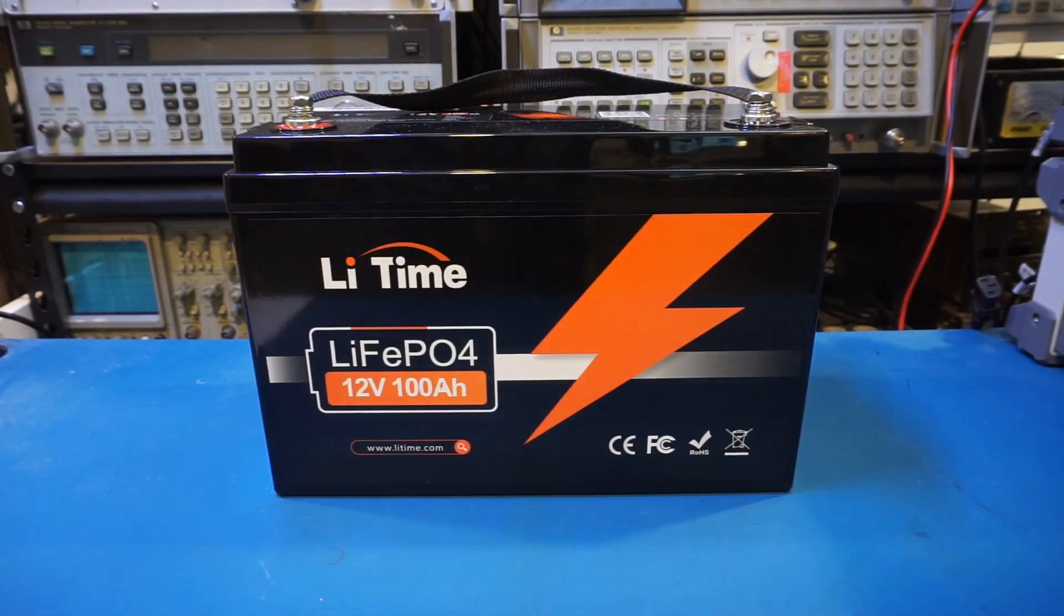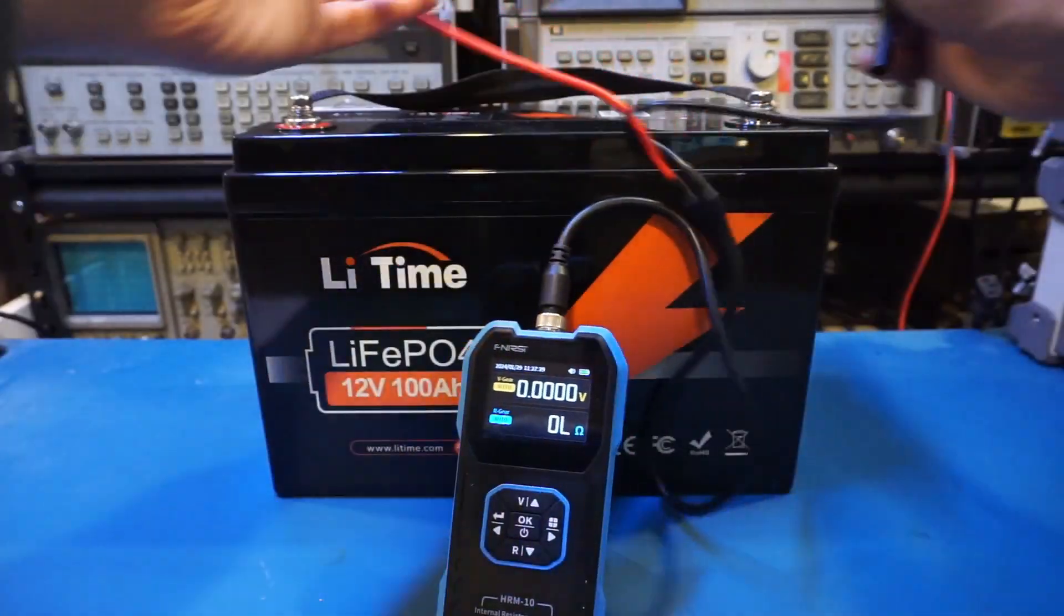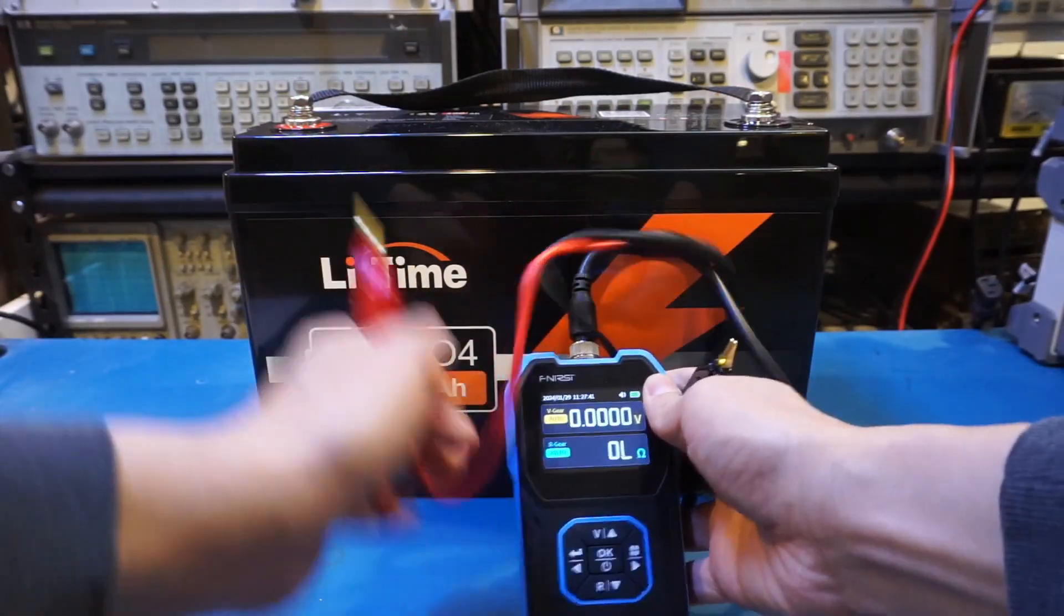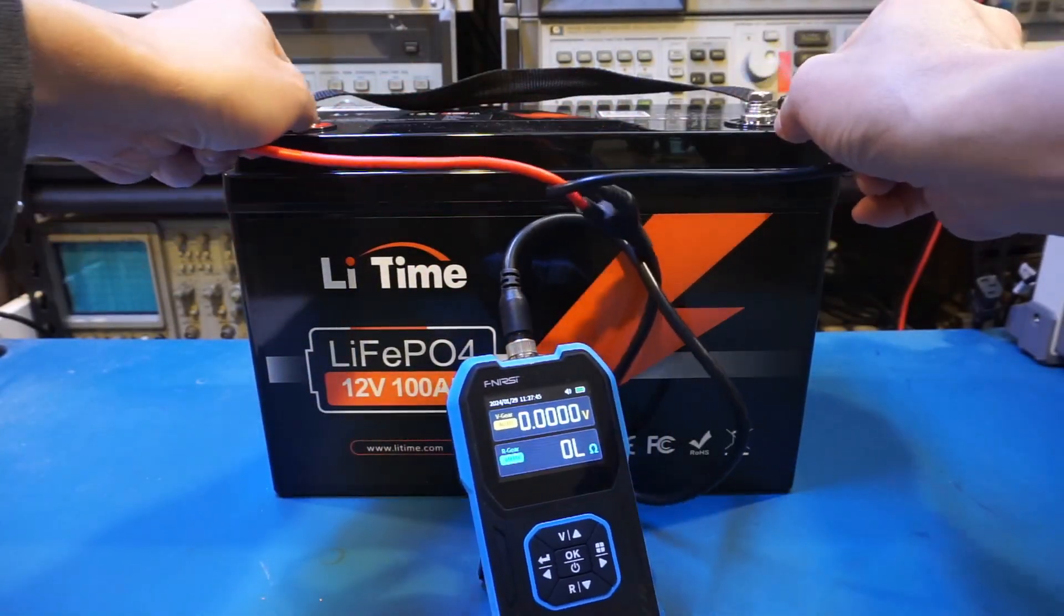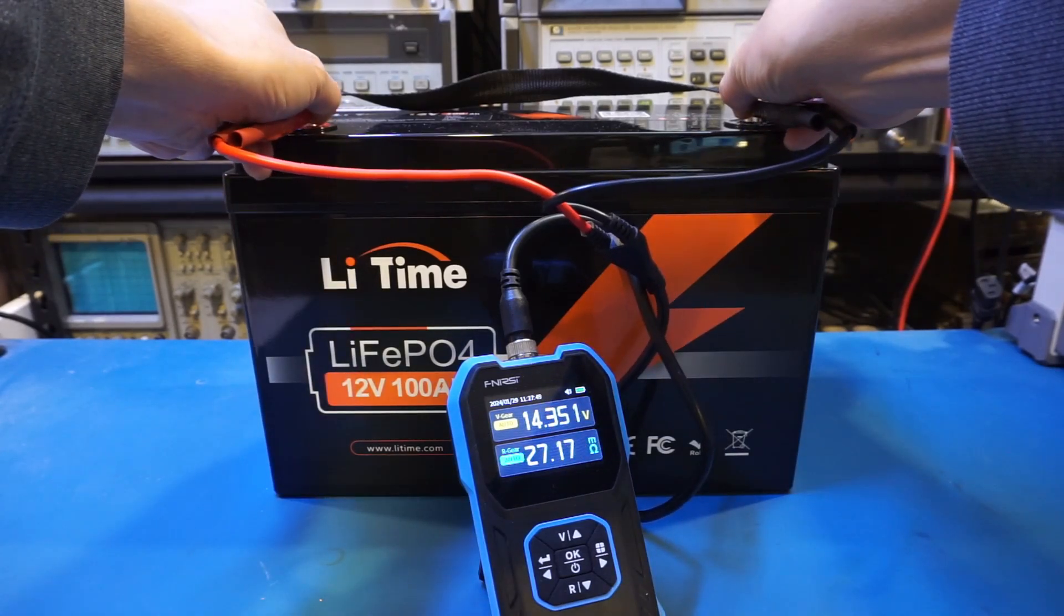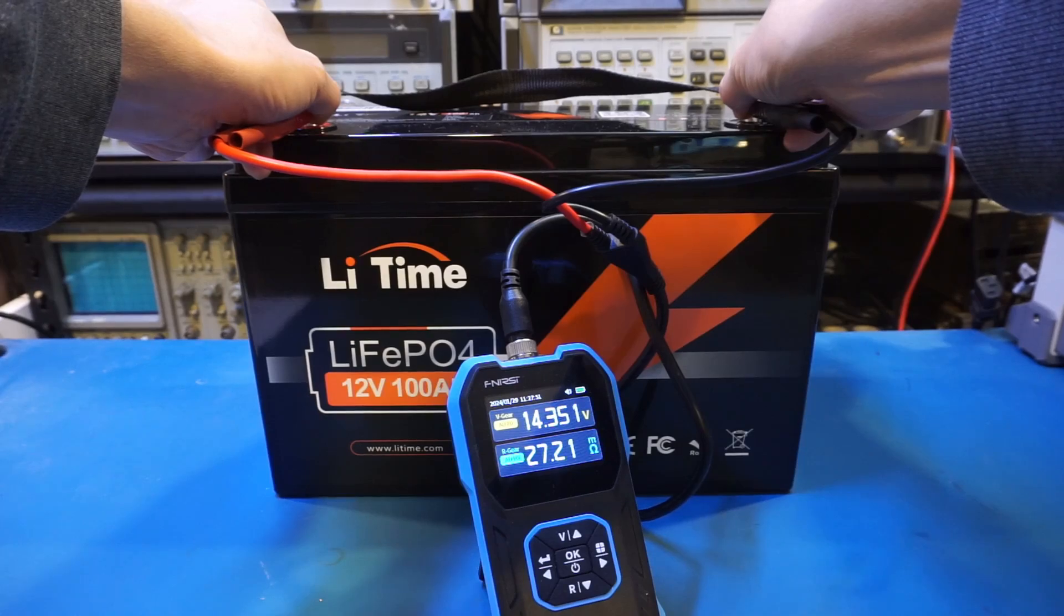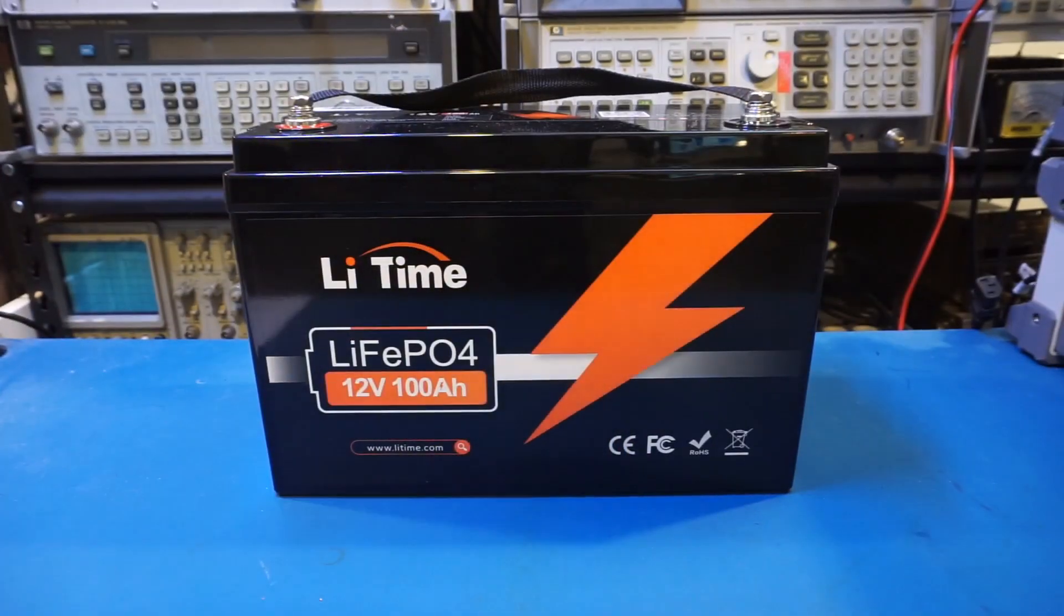The second meter I'm going to use to verify the result with is a Frenersi HRM10. So, let me put it in place here, and I probably have to hold the probes as well. And you can see we're reading roughly 27mΩ, which is in the same ballpark as what we measured before.